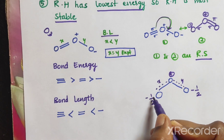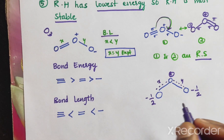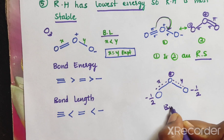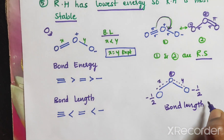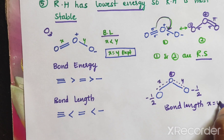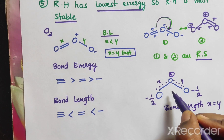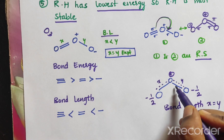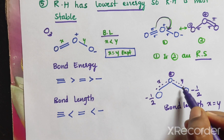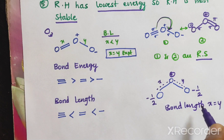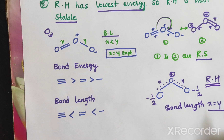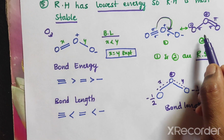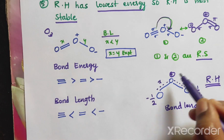Hence, we get a minus-half charge here. Bond length X is equal to bond length Y. This is the resonance hybrid — the actual structure. These two are the resonance structures, and this is the resonance hybrid.